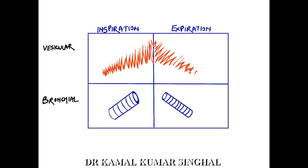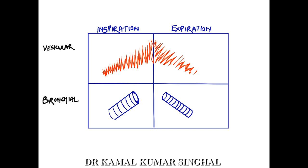Vesicular breath sounds are heard over normal lung. In a normal patient, the inspiration is immediately followed by expiration and there is no gap between the two phases. As normal vesicular breathing is also generated by turbulence of airflow, it is heard when the flow is maximal — that is throughout inspiration and in the early part of expiration.